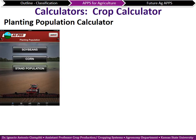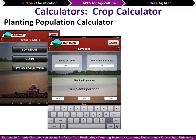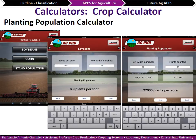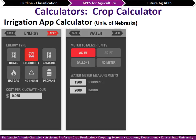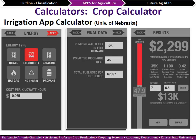The yield estimation app also has a moisture estimation section for predicting corn yields, and a maturity predictor — if you know the tassel date and expected frost date, a green indicator means you're on the safe side, red means you have a likelihood of frost before black layer. The plant population calculator lets you input seeds per acre and row width to calculate plants per foot, useful when making counts in the field to verify you've achieved your targeted seeding rate. Nebraska also has irrigation apps to estimate energy type, cost per kilowatt hour, and water applied, helping farmers irrigate more efficiently.